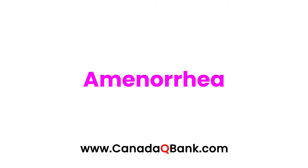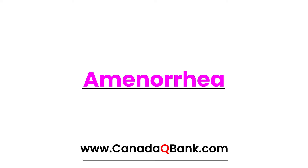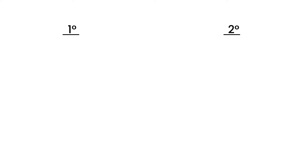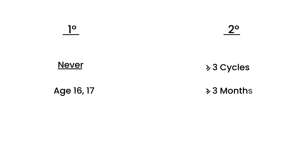Amenorrhea is the topic for this video. Amenorrhea by definition is absence of menses or failure of menses. There are two types: primary and secondary. Primary is when a teenage girl has never had a menstrual flow — she's reached perhaps age 16 or 17 and still has not had menstrual flow. Secondary is a situation in which a woman has had regular periods and then for greater than three cycles or greater than three months has stopped having periods.